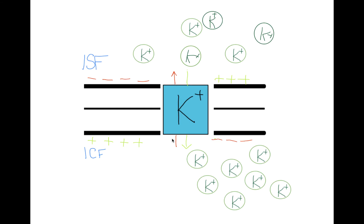After a certain length of time, the cell will reach a state of equilibrium. Equilibrium is defined as the state in which the movement of potassium out of the cell is going to equal the amount of potassium moving into the cell.